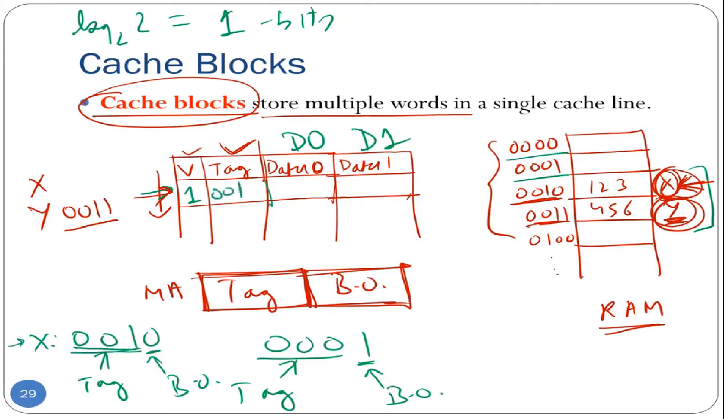The value of X, which is 123, will go here in data zero and the value of Y, which is 456 would be stored here in data one field.